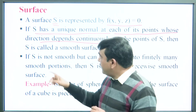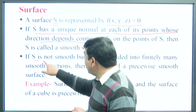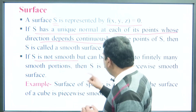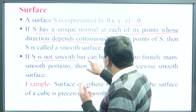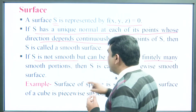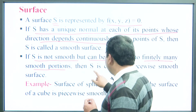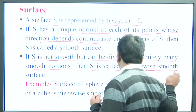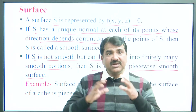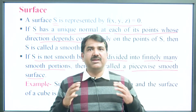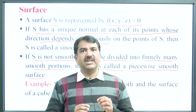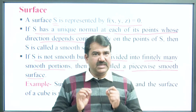But if S is not smooth, and if we can divide it into finitely many smooth portions, then S is called a piecewise smooth surface.